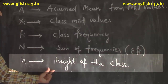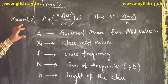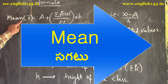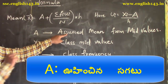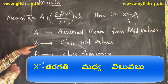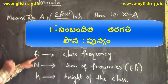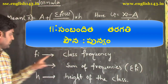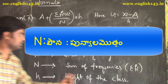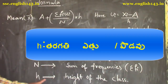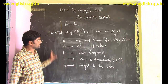This is the process to find the mean for grouped data using this formula. The frequency fi is the respective class frequency; n is the total frequency denoted by Σf; h is the height of the class interval. Let us take an example for a clear idea.